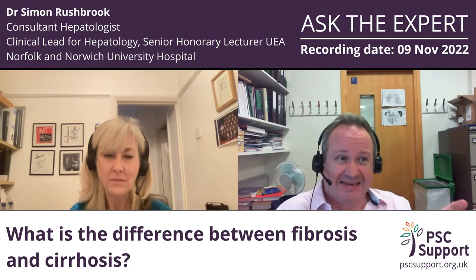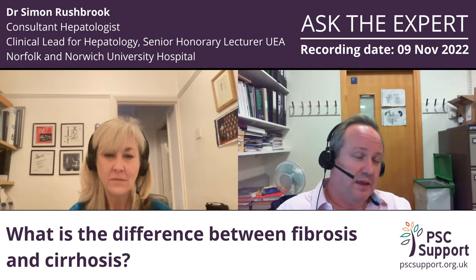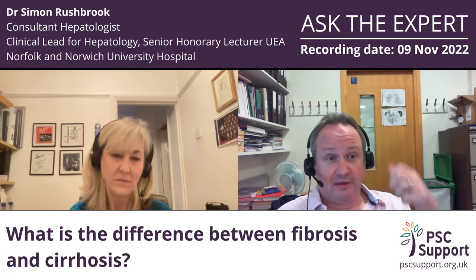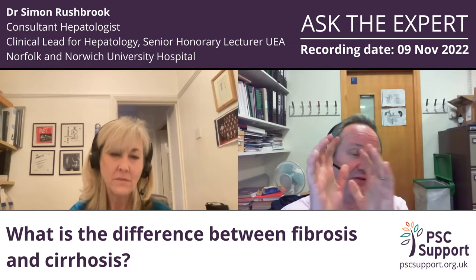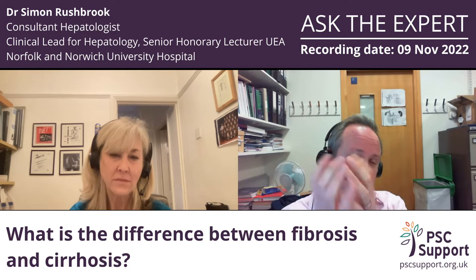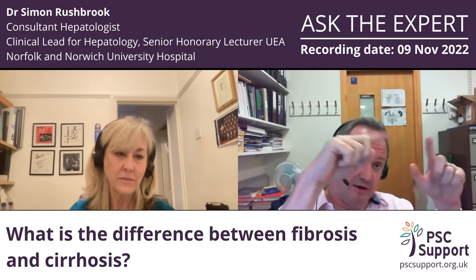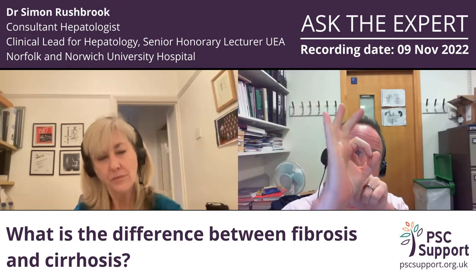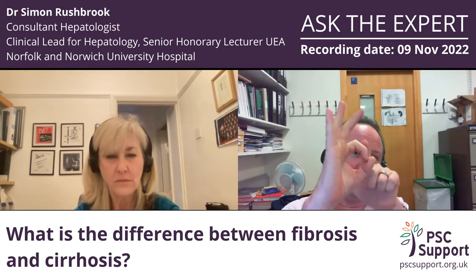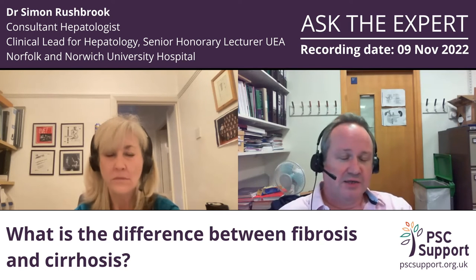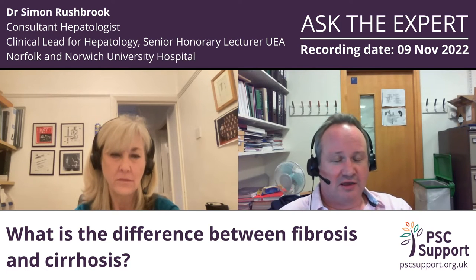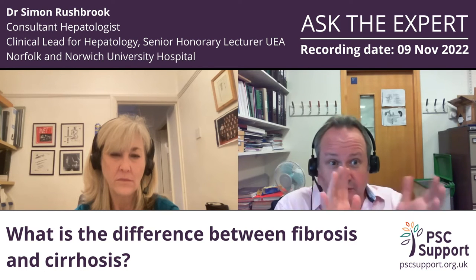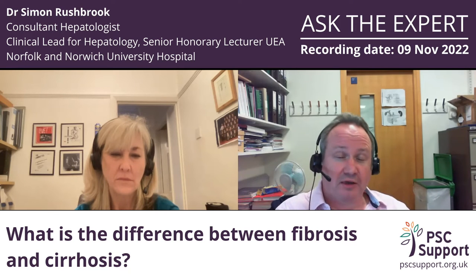Fibrosis is just scar tissue being laid down in the liver. I keep it simple: I think of none, mild, moderate, severe. Eventually there's so much scar tissue that the liver starts to look a bit nodular on its capsule, and if you did a biopsy of the liver you start to see these little rings of liver tissue surrounded by circles of scar tissue.